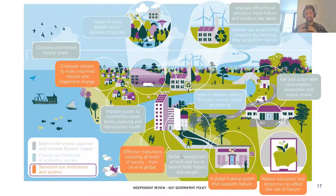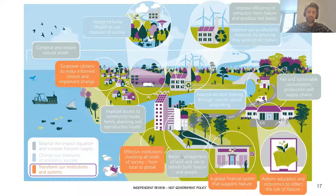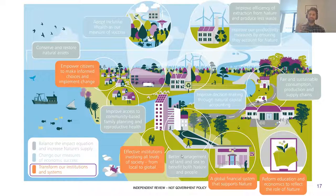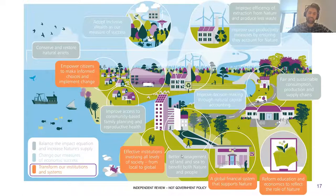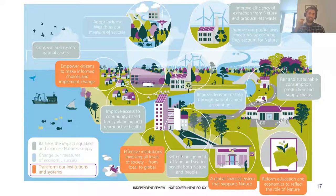On the global financial system, the review highlights that most financial investments are currently tilted toward encouraging unsustainable practices that degrade our natural resources, and that we need to rebalance global finance to support the natural world. This includes accounting for nature-related financial risks — risks that broader ecosystem degradation and depletion can bring to businesses and financial institutions — building on climate-related financial risk frameworks.